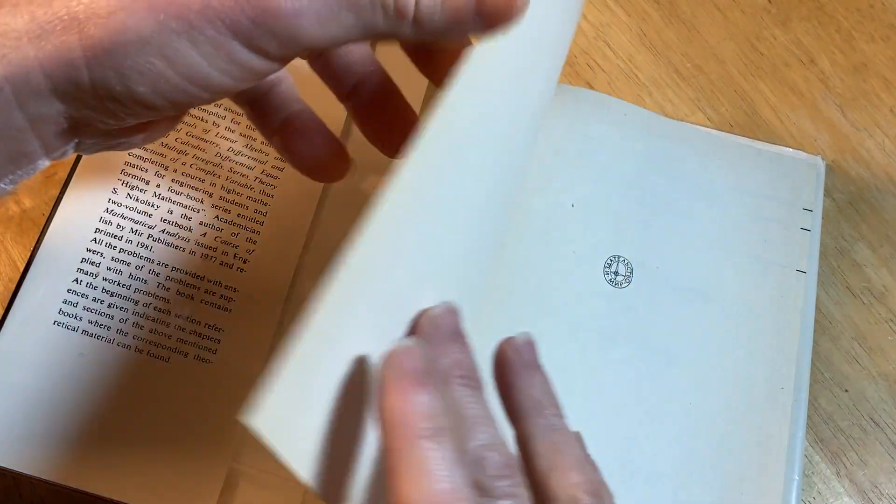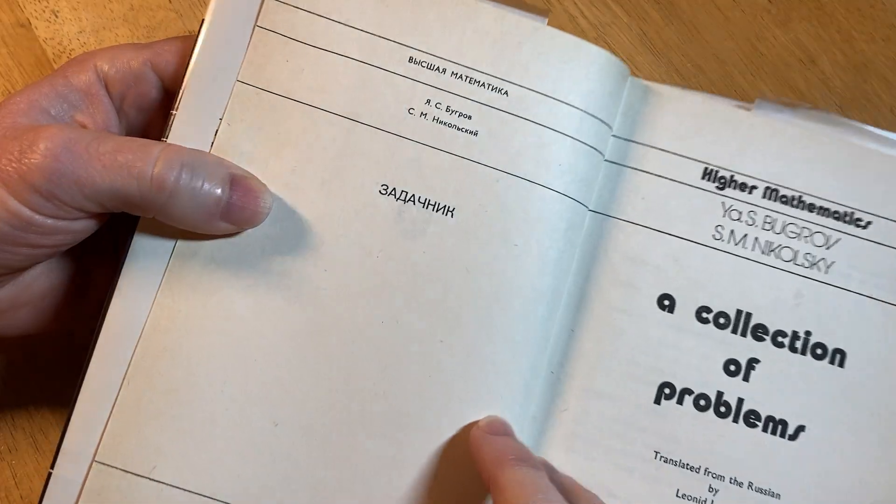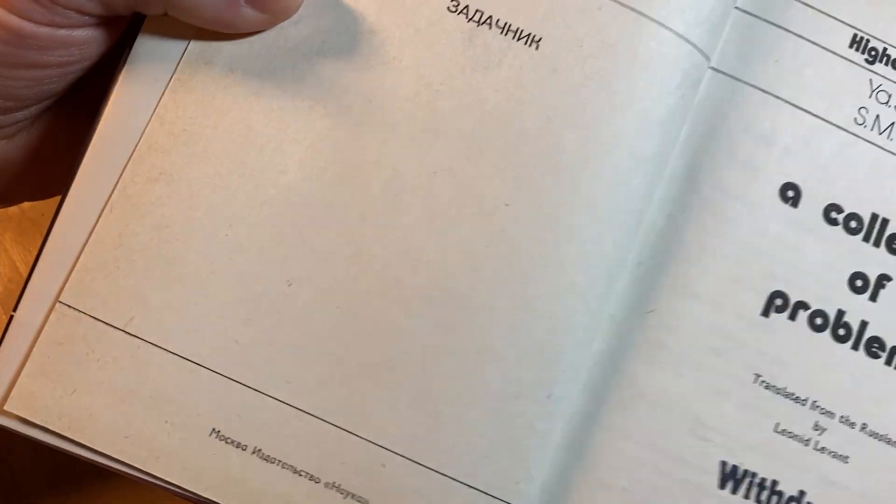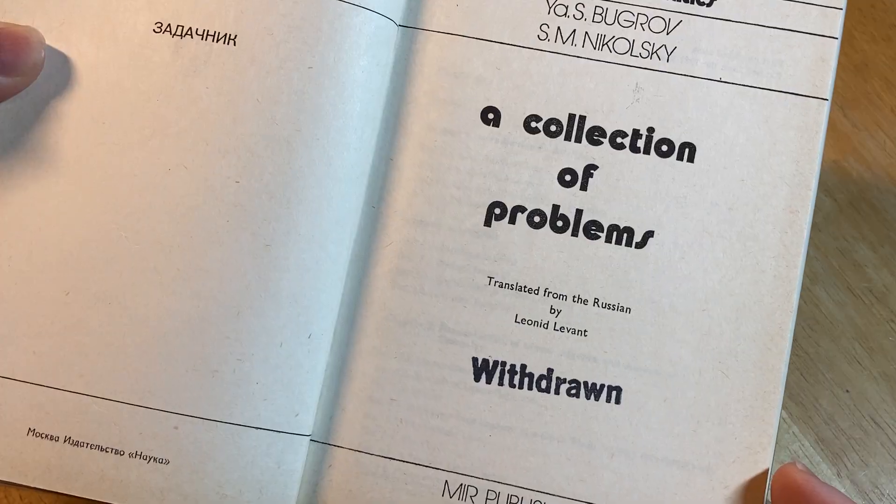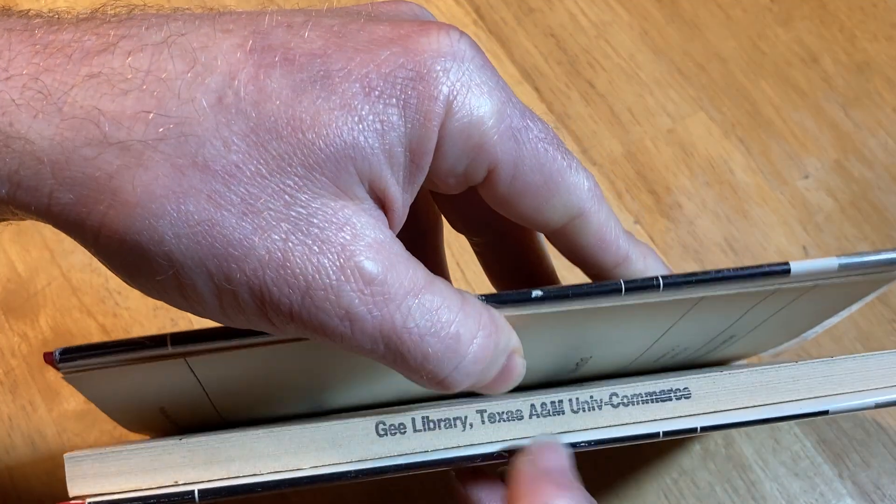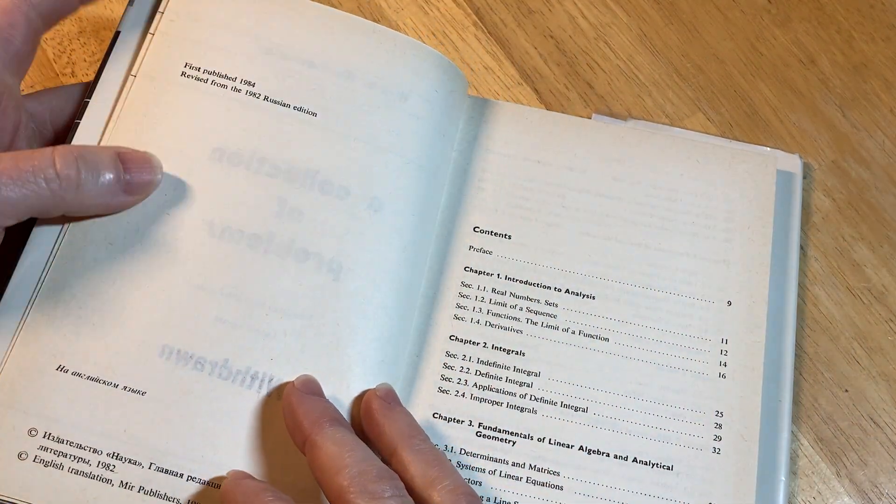So let's go ahead and just jump into the contents. It says some stuff there in Russian that I do not read Russian. Translated from the Russian by Leonid Levant. Withdrawn. This is an ex-library book. It says Guy Library, Texas A&M University, Commerce. I think that's in Commerce, Texas. First published in 1984. Revised from the 1982 Russian edition.